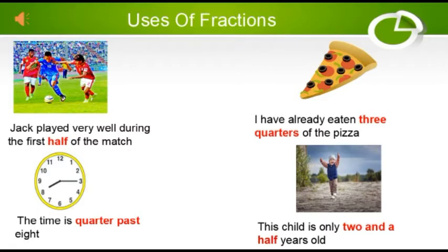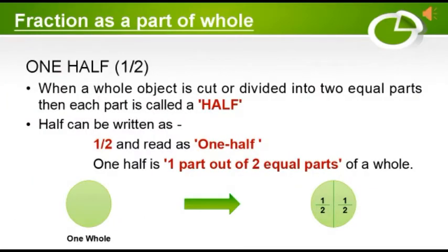One half: when a whole object is cut or divided into two equal parts, then each part is called a half. As you can see here, a whole circle has been cut or divided into two equal parts. Each part is called one by two, or half. One half means one part out of two equal parts of a whole circle.